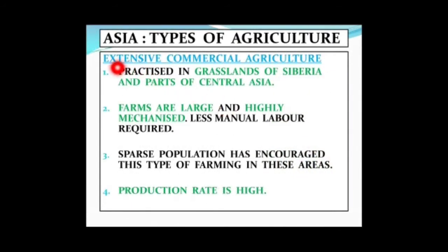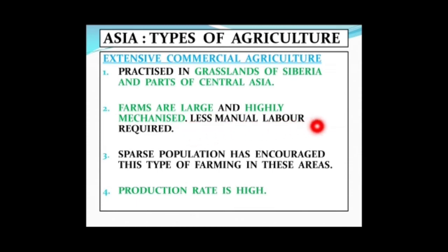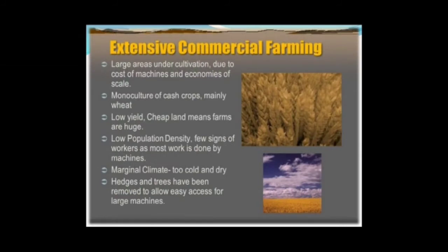The next type of farming is extensive commercial agriculture, practiced in the grasslands of Siberia and parts of central Asia. Farms are very large and highly mechanized, so big machines can be easily used and fewer people work in the field. This type of agriculture developed because population is less and production is high due to the very large farm sizes.